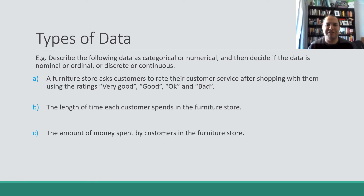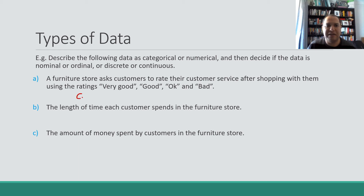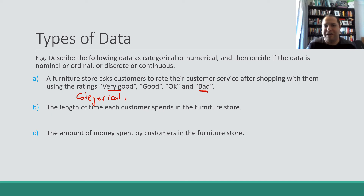Let's do some examples. A furniture store asks customers to rate their customer service using: very good, good, okay, and bad. First, we're not looking for numbers, so the data is categorical. Next, we ask: is there any order to these categories? Yes — there's very good at the top and bad at the very end, with good and okay in between. There is an order to the data, so that means our data is ordinal.